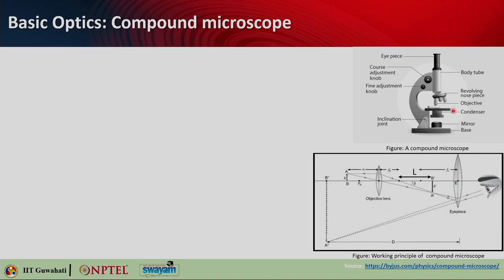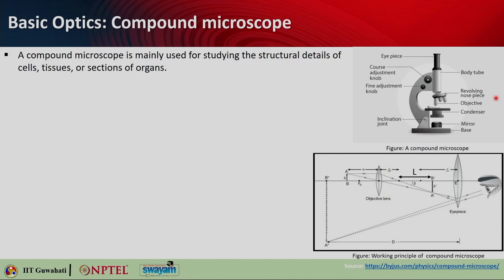Looking into the basics of nano characterization methods — how do we actually see macroscale objects? The first thing that comes to mind is a compound microscope. A compound microscope is mainly used for studying the structural details of cells, tissues and sections of organs. It has different components: the eyepiece, body tube, coarse and fine adjustment knobs, revolving nose piece, objective, condenser, and mirror base.